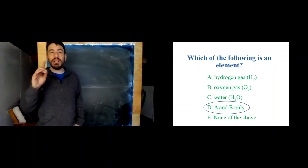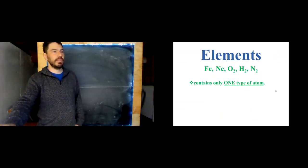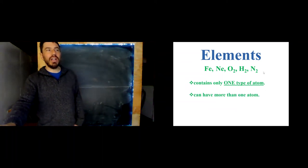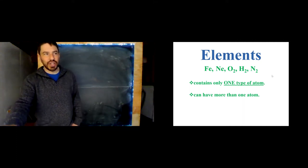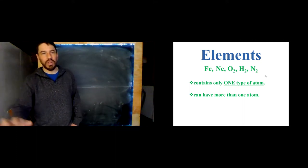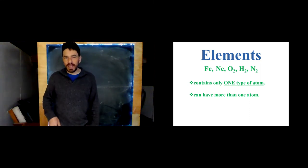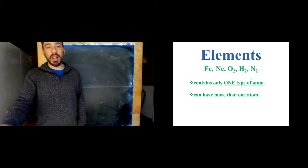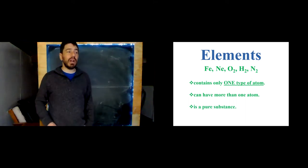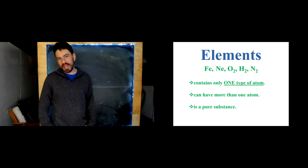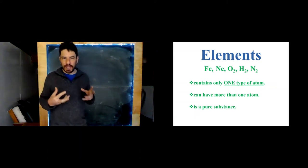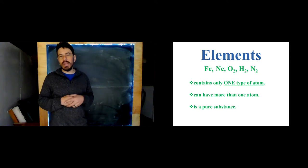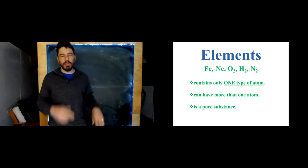An element is only made of a single type of atom. Examples include iron, neon, oxygen gas, hydrogen gas, and nitrogen gas. Remember that these are called diatomic molecules — meaning two of the same kind of atom make the molecule. Just because they have more than one atom doesn't mean they're not an element. They can be an element with more than one atom, as long as it's all the same type. And it is a pure substance — if I have a container of hydrogen, it's hydrogen everywhere in there.